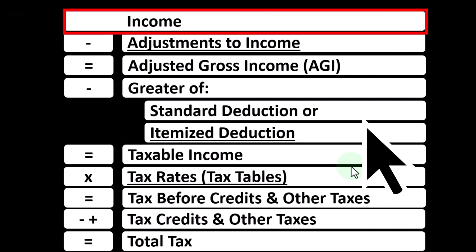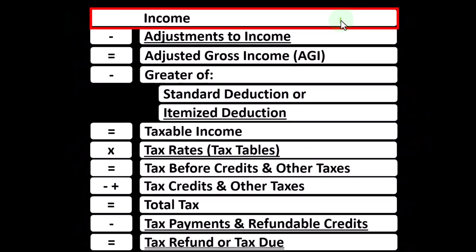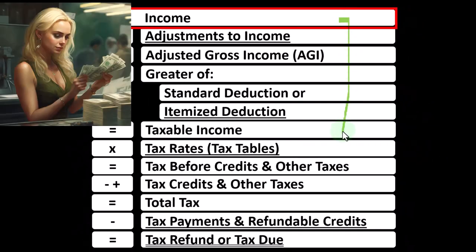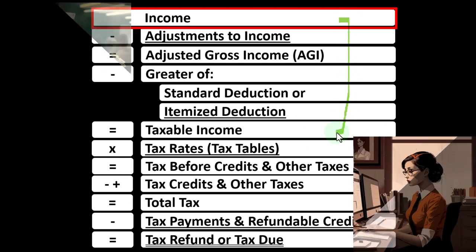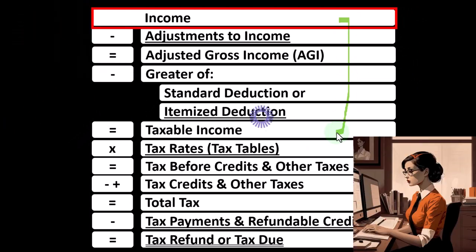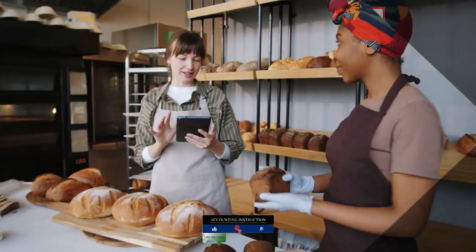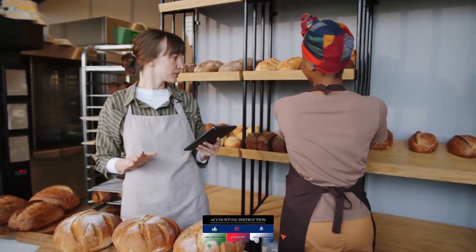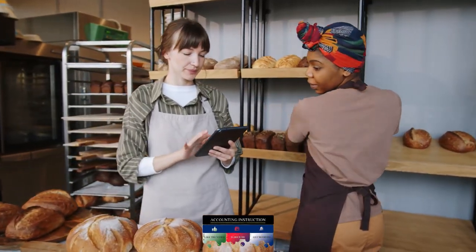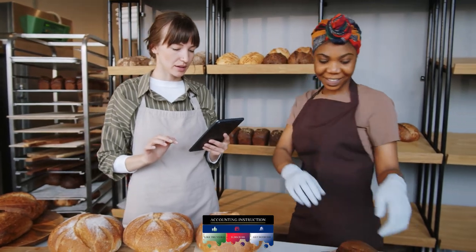Looking at the income tax formula focused on line one, remembering the first half of the income tax formula is in essence an income statement — just an outline with other forms and schedules flowing into these line items. The Schedule C has business income minus business expenses, with the net business income flowing into line one income of the income tax formula.